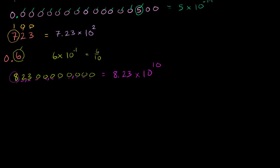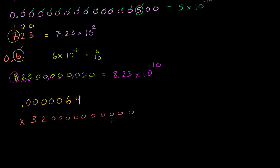Let me do a couple more computation examples. Let's say we have a really small number — 0.0000064 — and I want to multiply it by a really large number: 32,000,000,000,000. Let's put them in scientific notation to make it easier. The small number would be 6.4 times 10 to the minus 6, and the large number would be 3.2 times 10 to the 11th.